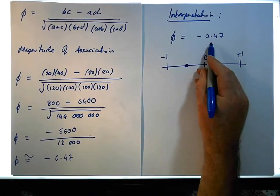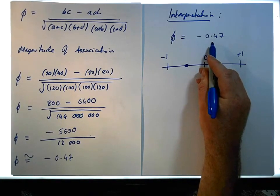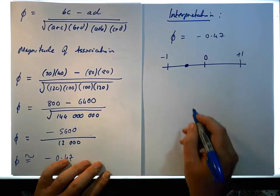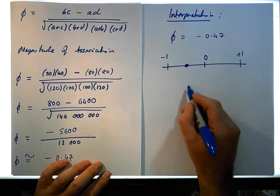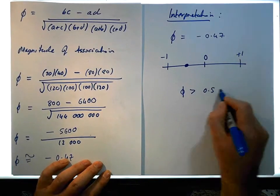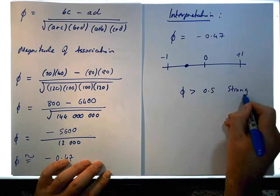What we have here is a medium or moderate correlation between the two variables. If the absolute value of phi is bigger than 0.5, we'd say there's a strong correlation.